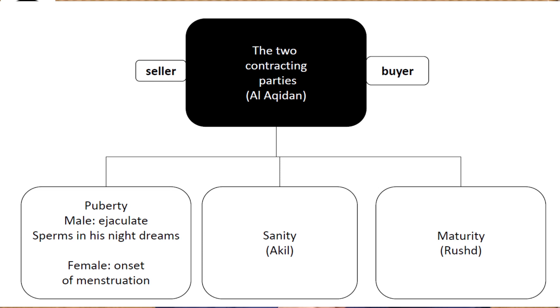The second pillar — the seller and the buyer — has competency requirements: puberty of the two parties, whether female or male; sanity, meaning a sound mind; and maturity — the ability to manage finances in an appropriate way.